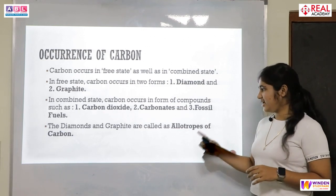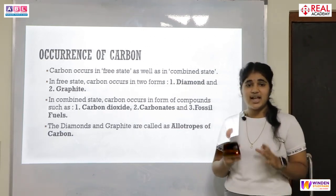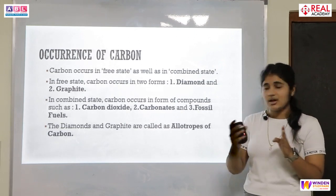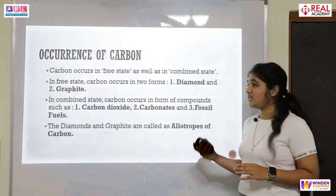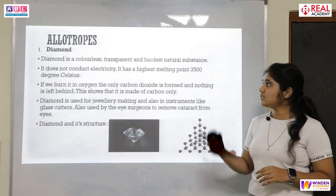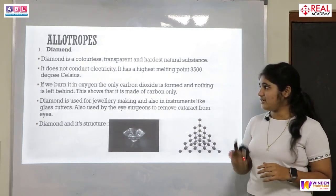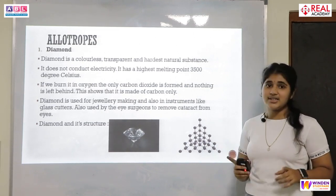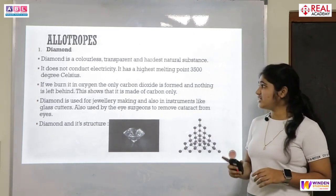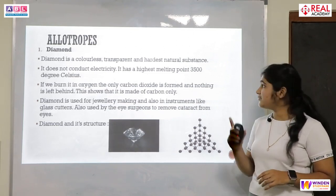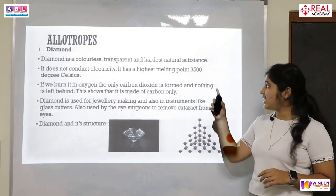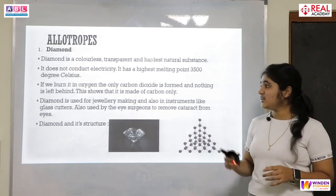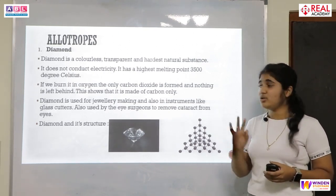Diamond and graphite are called the allotropes of carbon. Allotropes means a single element found in different physical forms. The first allotrope is diamond. Diamond is a colorless, transparent, and shiny substance, and it is considered the hardest natural substance. It does not conduct electricity and has the highest melting point of 3,500 degrees Celsius. When carbon is burned in oxygen, only carbon dioxide gas is produced, which shows that diamond is made only of carbon.